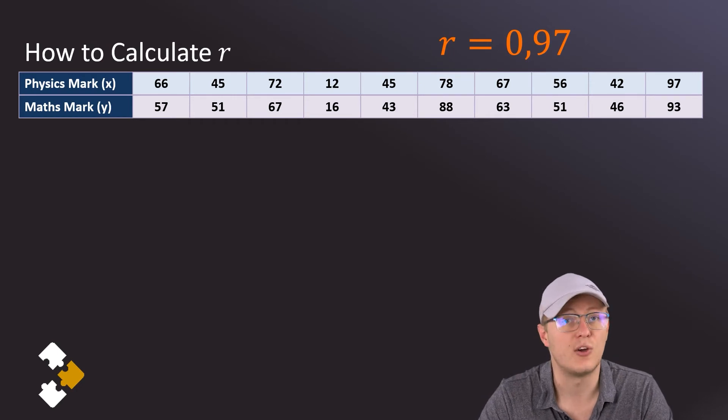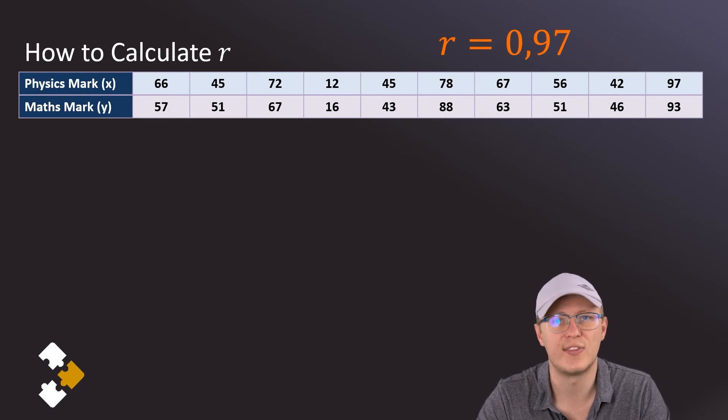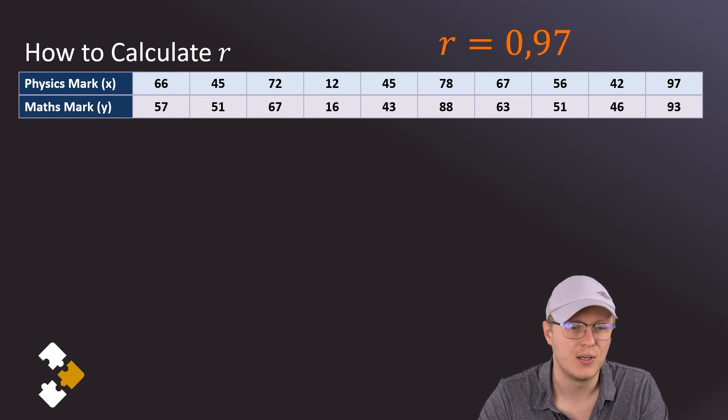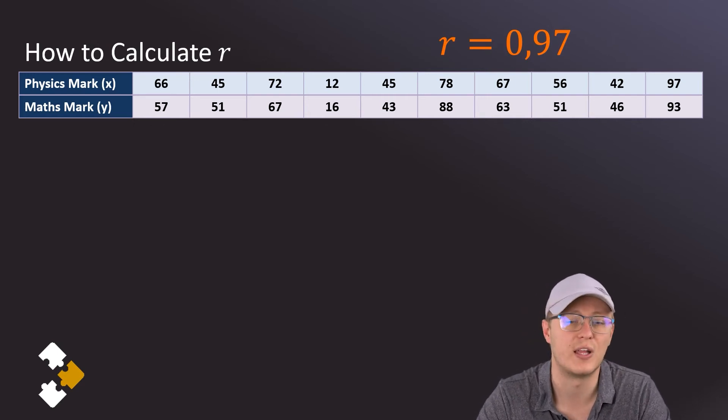So 0.97, we know, is very close to one, so this is a very strong correlation. And because we got a positive number, we know that it's a positive correlation, which means that as one thing increases, we expect the other thing will increase. So what does that mean? People who do better at physics are also more likely to do well at maths.